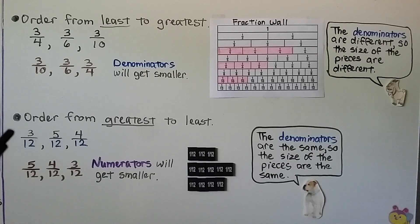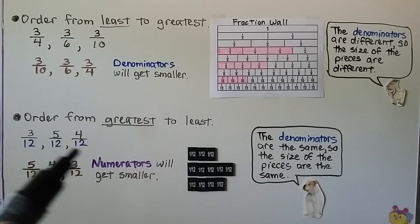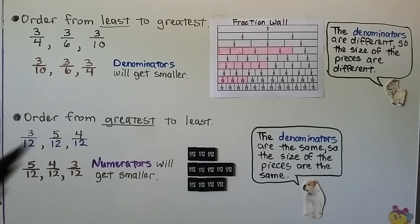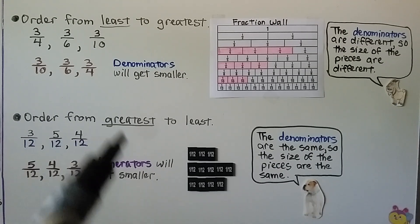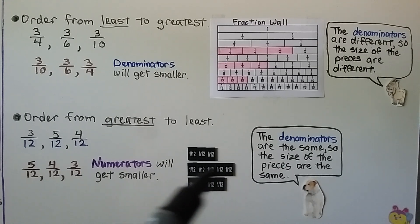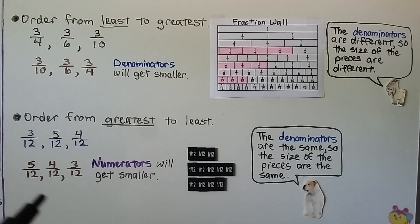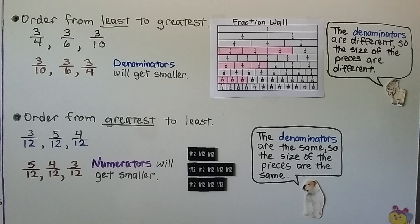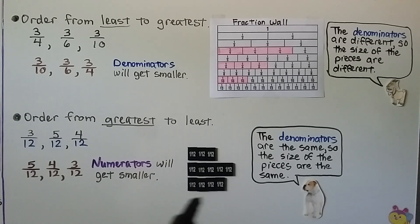We can order three-twelfths, five-twelfths, and four-twelfths from greatest to least. They all have the same denominator, so we use unit fractions that are all the same size — all one-twelfth pieces. From greatest: five-twelfths is longest and goes first; four-twelfths is next; and three-twelfths is the shortest and goes last. The numerators are getting smaller — five, four, three — while all the denominators stay the same. Same denominators means the size of the pieces are the same, so we use all the same size unit fractions.